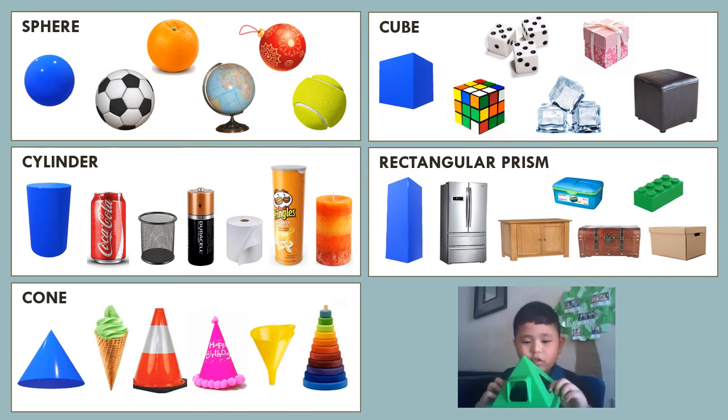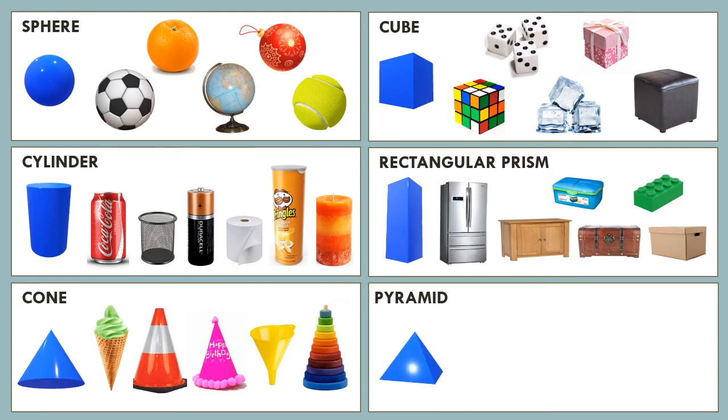Another 3D shape that looks like a cone is a pyramid. But unlike the cone, the base of the pyramid is not a circle. The base can be a square or a rectangle or a triangle.